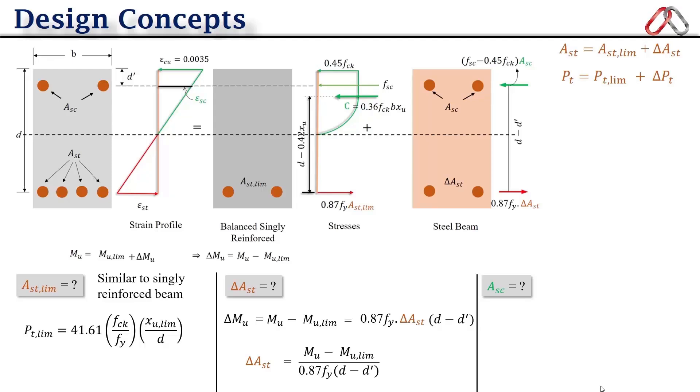And to find out the area of compression reinforcement A_sc, we can use equilibrium concept. Because the area of delta A_st is already found out, so we can say here that 0.87 f_y into delta A_st will be equal to f_sc minus 0.45 f_ck into A_sc. And further we can find out A_sc as 0.87 f_y into delta A_st upon f_sc minus 0.45 f_ck. So using this formula we can calculate the area of steel in an easy way.